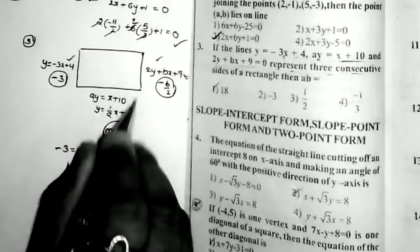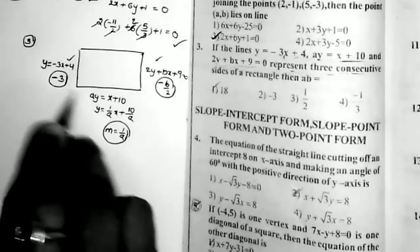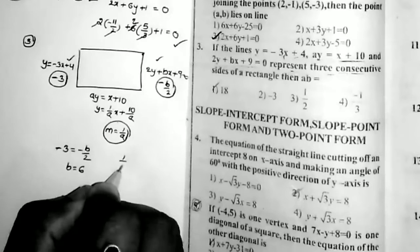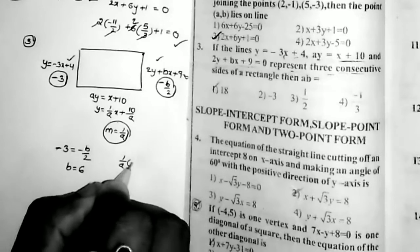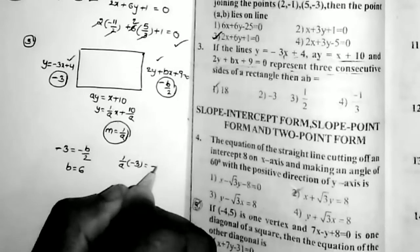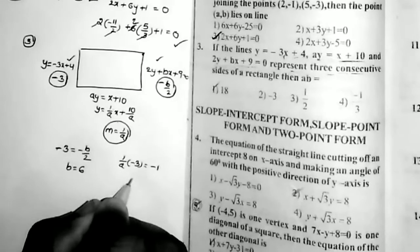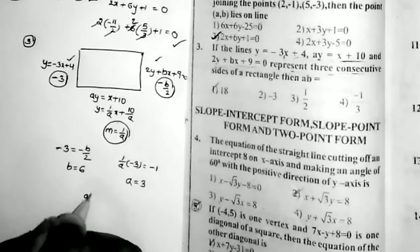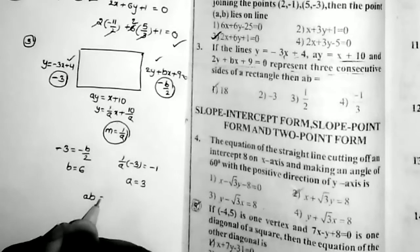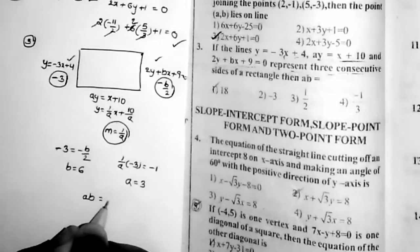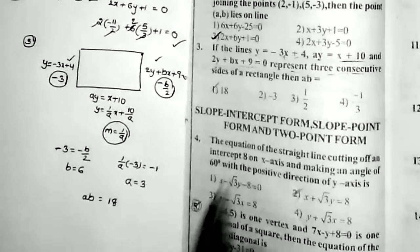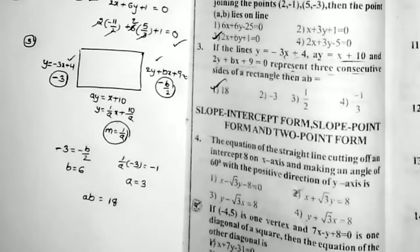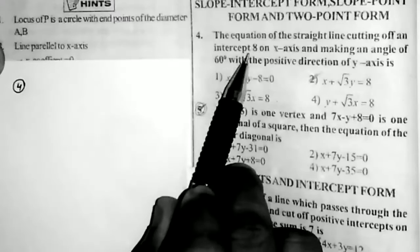Since the two adjacent lines are perpendicular: M1 × M2 = −1. That is (1/a)(−3) = −1, giving a = 3. Therefore a × b = 3 × 6 = 18. That is the first option.